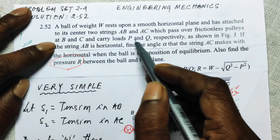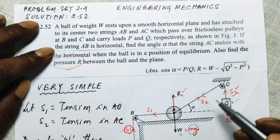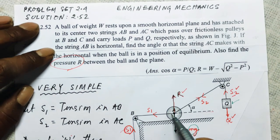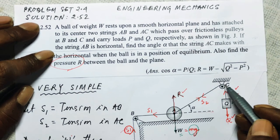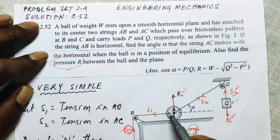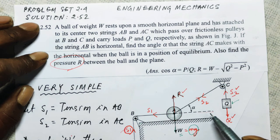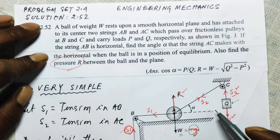The strings carry loads P and Q respectively as shown in the figure. Since string AB is horizontal, find the angle alpha that the string AC makes with the horizontal when the ball is in equilibrium. Also find the pressure R between the ball and the plane.